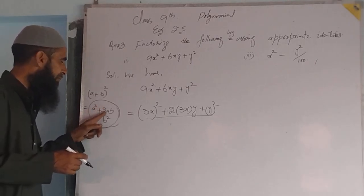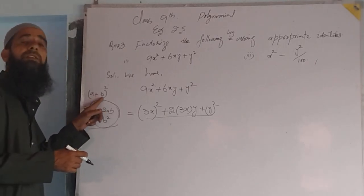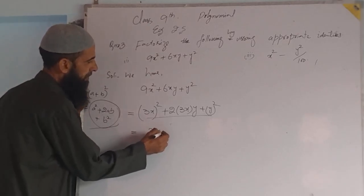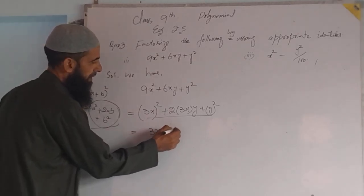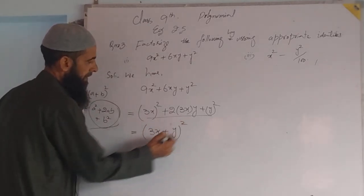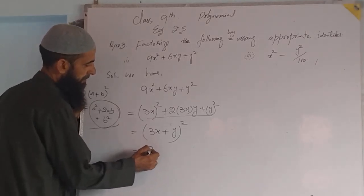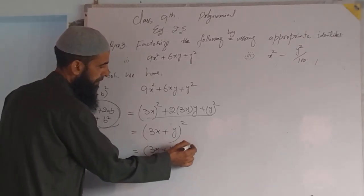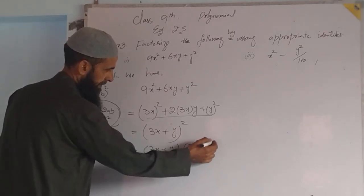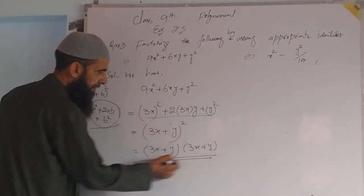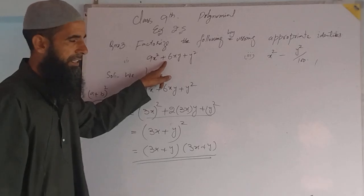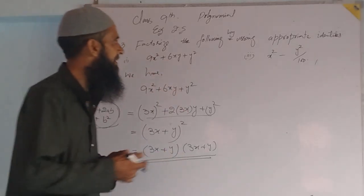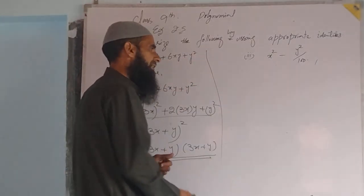Clearly this expression is the same form as the identity. The only difference is a equals 3x and b equals y. Now using the appropriate identity — a squared plus 2ab plus b squared equals (a + b) whole square — the answer is (3x + y) whole square, which can be written as (3x + y) into (3x + y).